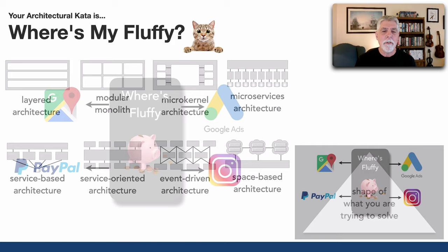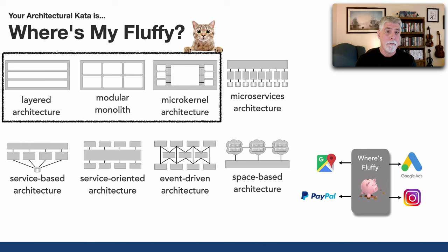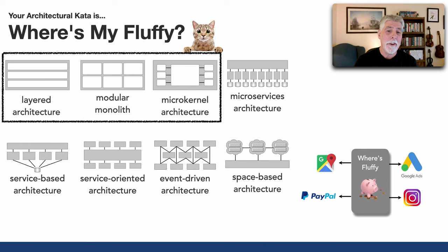Now let's turn to the eight architecture styles from lesson 180. Looking at the core shape of our problem — a simple, low-cost website solution — we're probably going to stick with a monolithic architecture style rather than diving into the distributed world. And in fact, if you look at the shape of our problem as I've drawn it, the microkernel architecture style matches that shape pretty well.